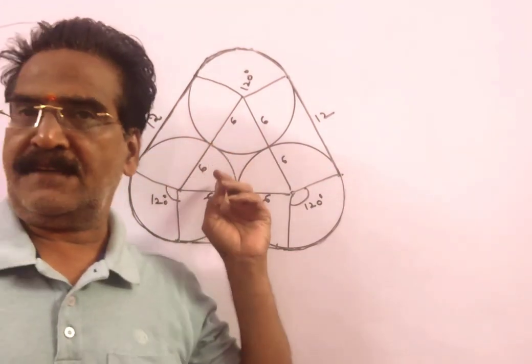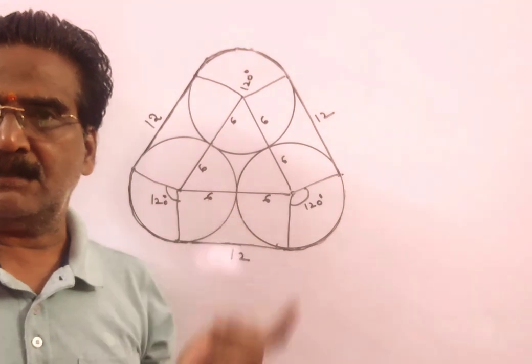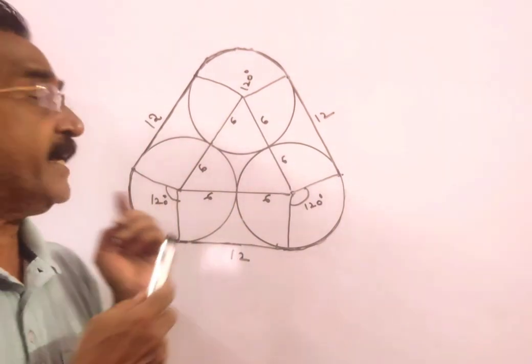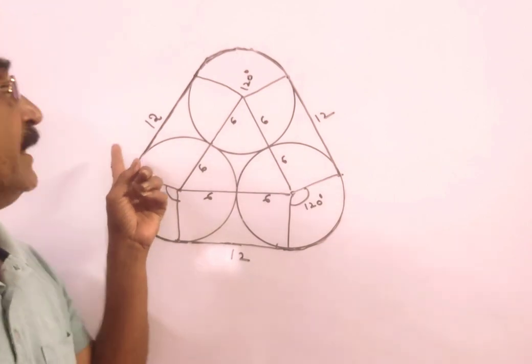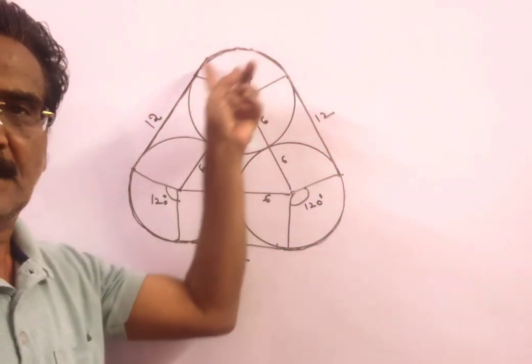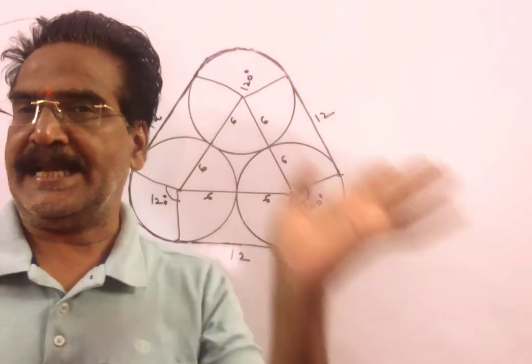See friends, three circuits of radius 6 cm are touching each other and a string is tightly tied around these three circuits. Around these three circuits, what is the length of the string?